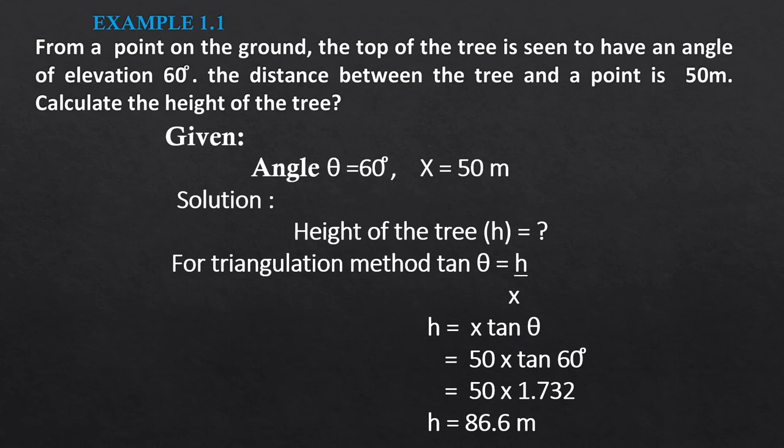X is 50 meters and theta is 60. The value of tan 60 is square root of 3 equals 1.732. So 50 times 1.732 gives us 86.6 meters, which is the height of the tree.